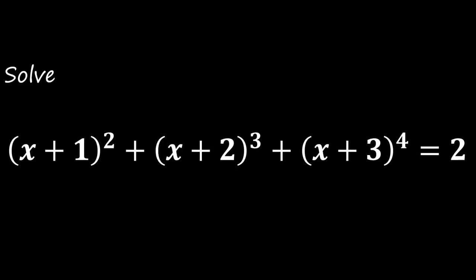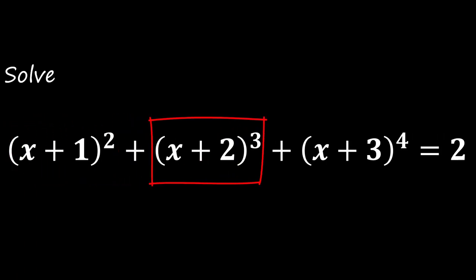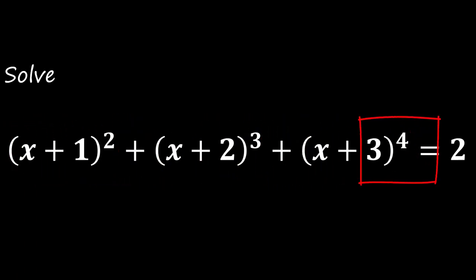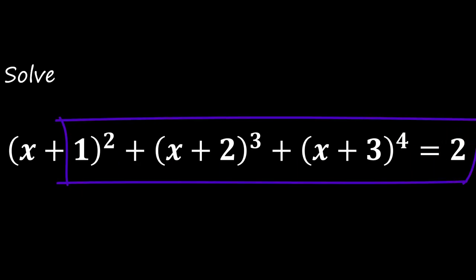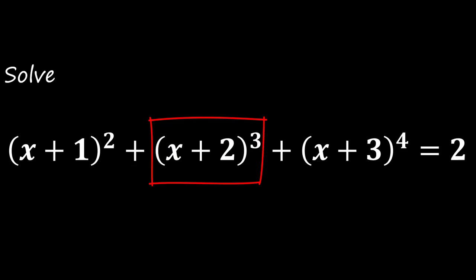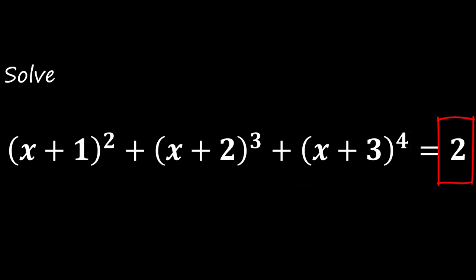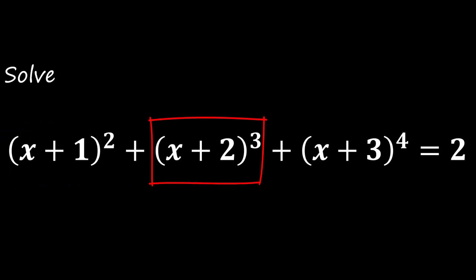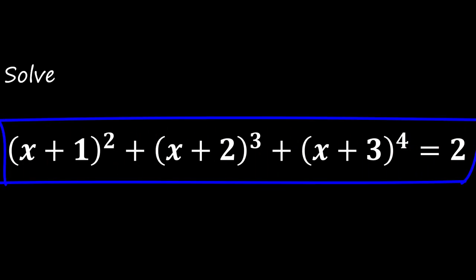Hello everyone, welcome to another exciting math problem involving algebra and equations suitable for beginners. Here is the problem: Solve (x+1)² + (x+2)³ + (x+3)⁴ = 2. Before we uncover the solution, I encourage you to hit the pause button, grab your pen and paper and give it your best shot. When you are ready, feel free to share your answers in the comments. Then we explore the solution together. Let's get started.